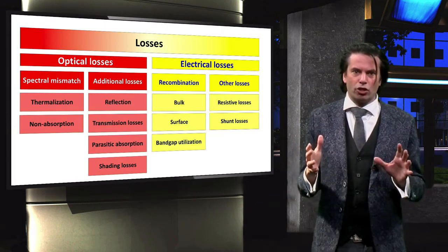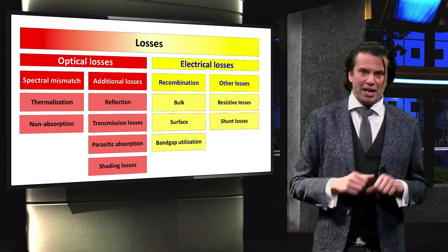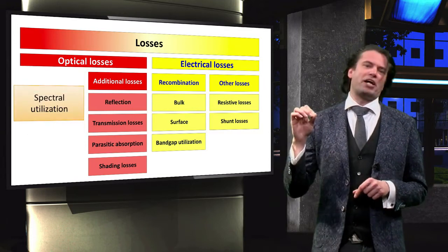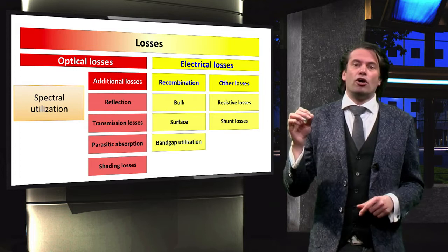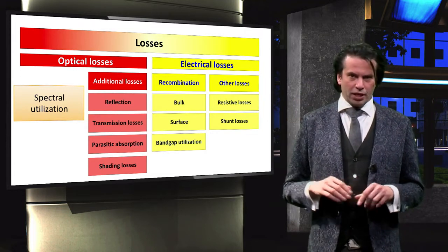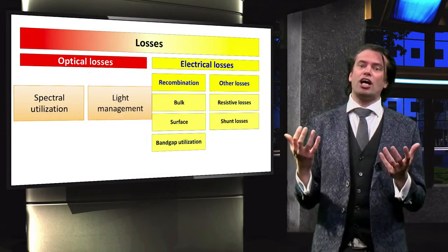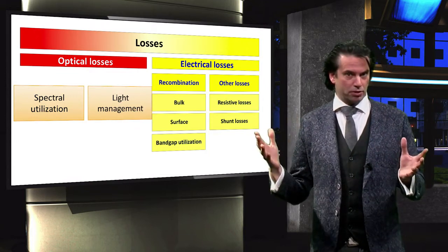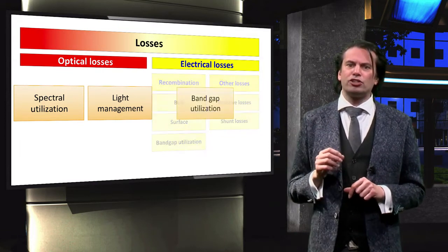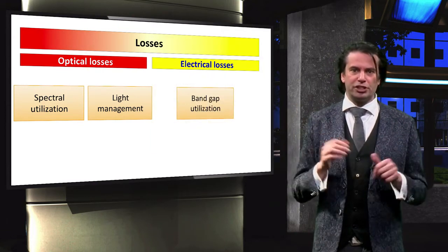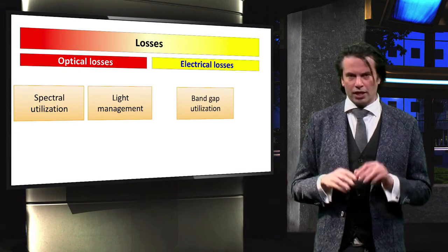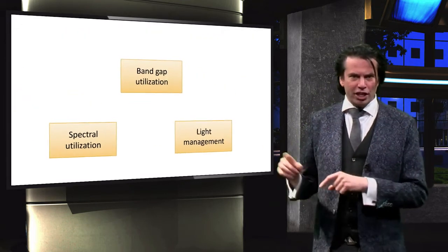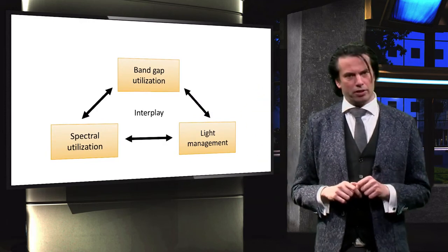We can translate these loss mechanisms into three major solar cell design rules. The losses due to spectral mismatch are the subject of spectral utilization. The additional optical losses are the main concern of the design rule known as light management. The electrical losses are considered in the band gap utilization design rules. Designing any type of solar cell involves a delicate interplay between these three pillars.